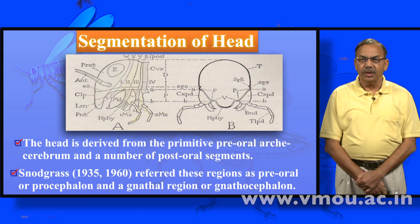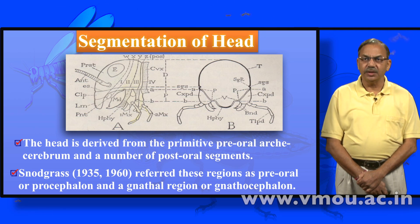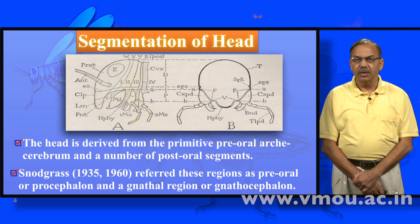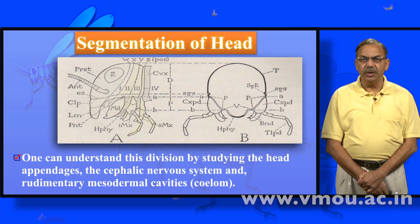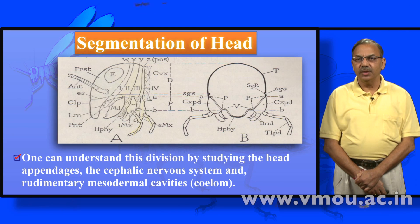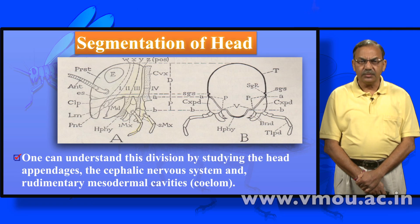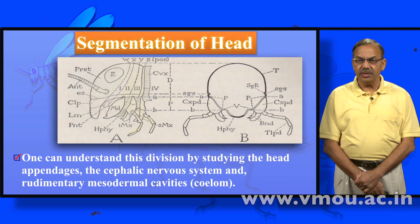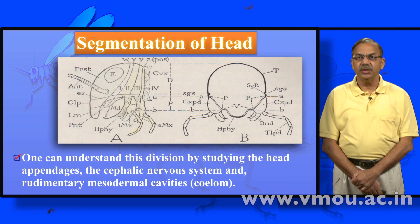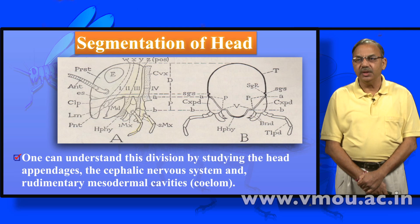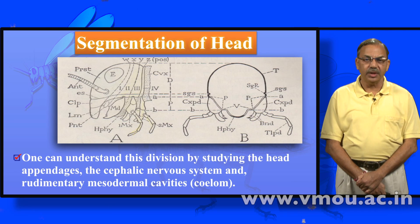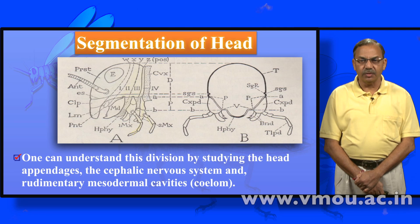This diagram shows the same thing. As discussed earlier, there is a tergum, there are pleura, and there is a sternum. Identically, in diagram B the same configuration is there, concerning the maxillary palp. In the first diagram, this segmentation is distinctly clear. As Snodgrass said, one can understand this division by studying the head appendages, the cephalic nervous system, and the rudimentary mesodermal cavities, that is the coelom. A segment is constituted by a pair of coelomic sacs, a pair of appendages, and a pair of nerve ganglia.